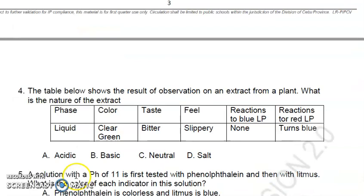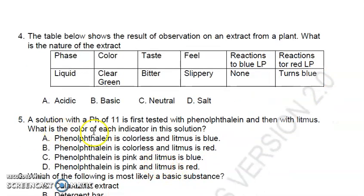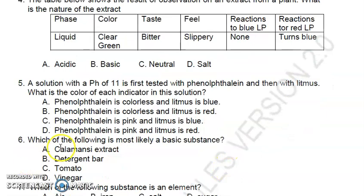Number four: the table below shows the result of observation on an extract from a plant. What is the nature of the extract? The answer is letter B, basic - it turns the litmus paper blue. Number five: a solution with a pH of 11 is first tested with phenolphthalein and then with litmus. What is the color of each indicator? The answer is letter C - phenolphthalein is pink and litmus is blue, so it's basically basic.